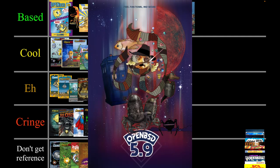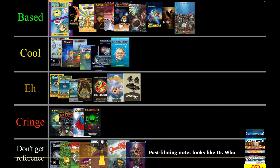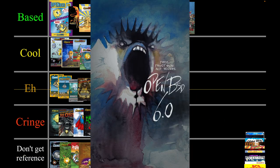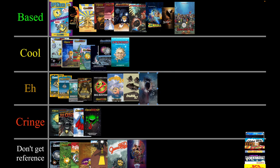I don't really get this one so I'm going to put it in 'don't get reference.' OpenBSD 6.0 — I don't really know what to think about it. It kind of looks cool but at the same time it kind of looks cringe. I'm judging it based on if I would purchase it and I don't know if I'd buy it, so I'm just going to put it in eh — I'm torn between cool and cringe.